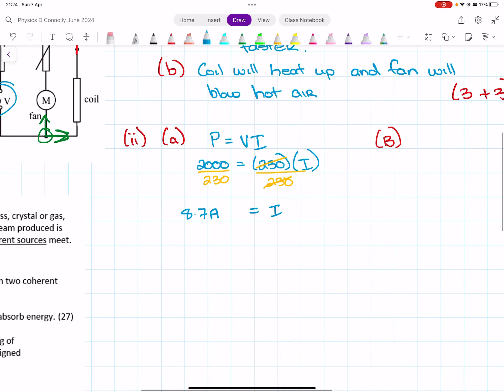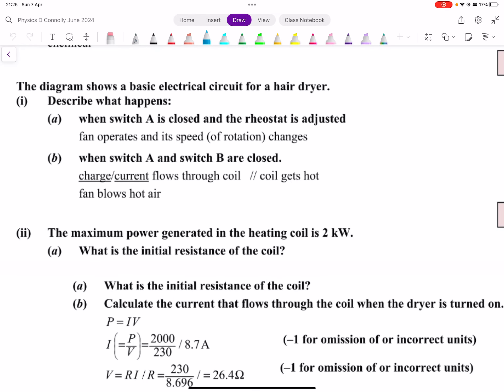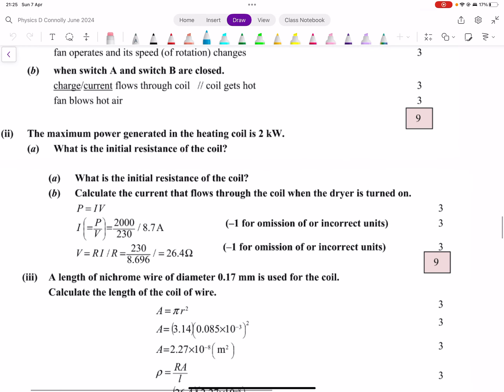What is the initial resistance of the coil? So do I then have to do V equals IR? V is 230, I is 8.7, and then we get R. We divide that by 8.7, and 8.7 is not a resistance, which is what I was asked for. 26.4 ohms, because it's a resistance.